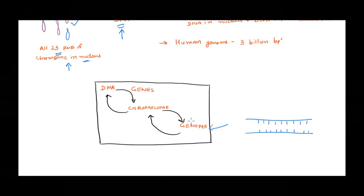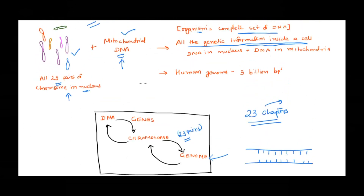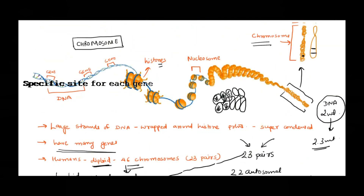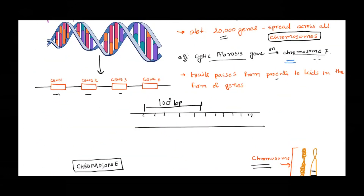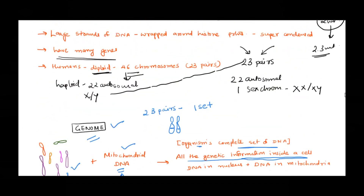So what nature did is — this genome, which has a lot of information, nature divided it into pieces: 23 pairs of chromosomes. That becomes easy — this whole lot of genome is divided into 23 chapters. Each chapter is going to have different information in it, so you can access it whenever you want based on your need. Similarly, all the genes present in the genome are divided among these chromosomes. There is a specific site for each gene on each chromosome — as I said, the cystic fibrosis gene is present on chromosome number seven, a specific locus.